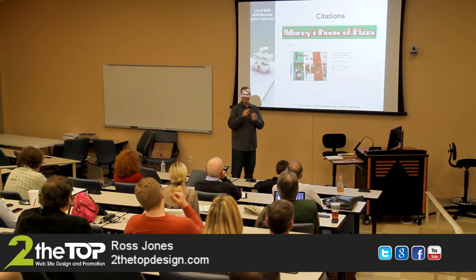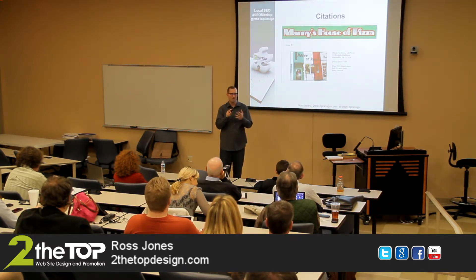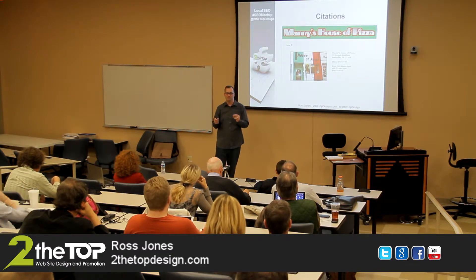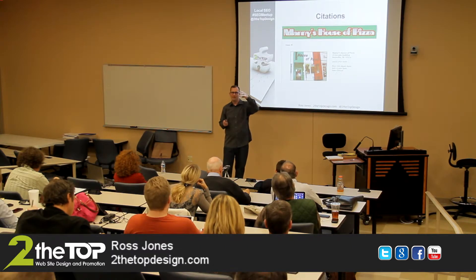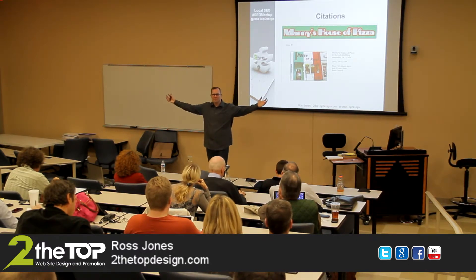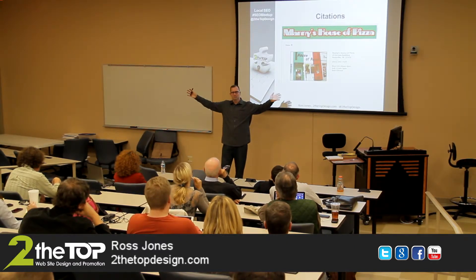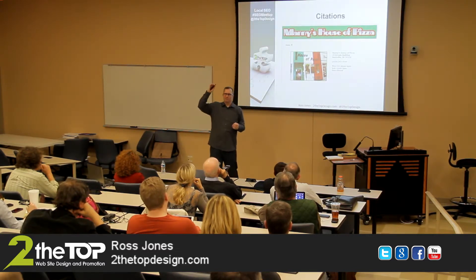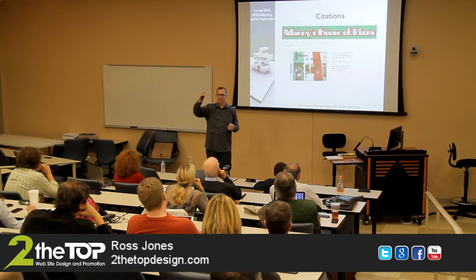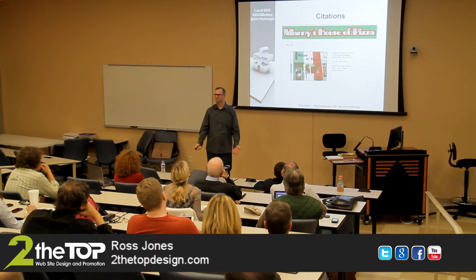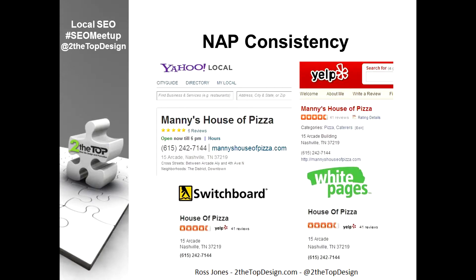This is where we're talking about NAP — name, address, phone number — which is a big deal for local search. If the NAP all matches, Google says 'yes, they're talking about the same place.' If it's dramatically different, Google says 'two different places.' If it's a little different, Google says it's not sure. Google tries to primarily key on the phone number, but if the name is different and the street address and phone number are the same, is it the same business? Did they change ownership and rename? That's the question Google has — and if Google doesn't understand, you may not get credit for as many citations.